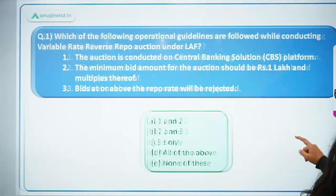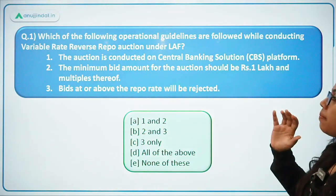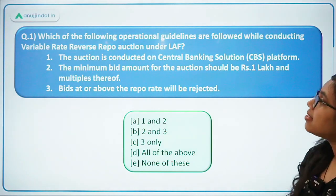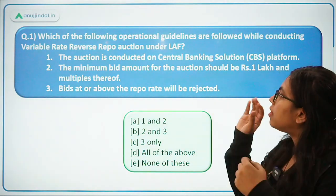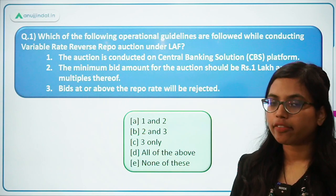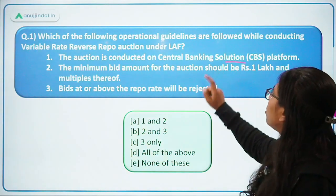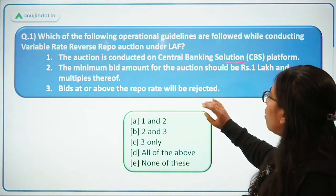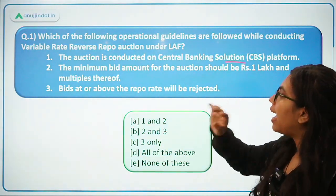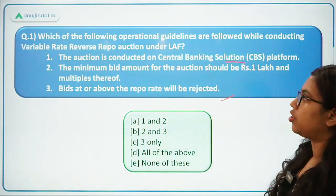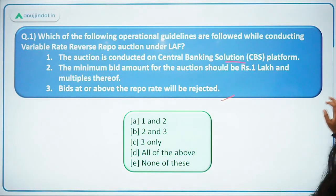Now let's move forward to the questions. Both news items were simple yet analytical and very important from your exam perspective. The first question asks: which of the following operational guidelines are followed while conducting variable rate reverse repo auction under the LAF? First, the auction is conducted on the Central Banking Solution platform. Second, the minimum bid amount for the auction should be rupees one lakh and multiples thereof. Third, bids at or above the repo rate will be rejected.